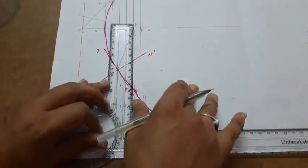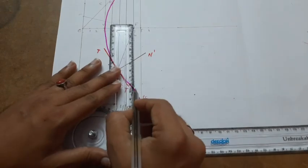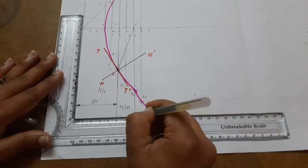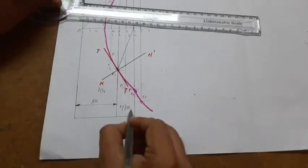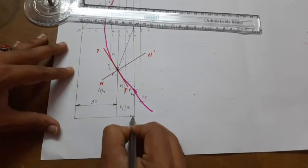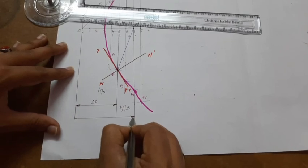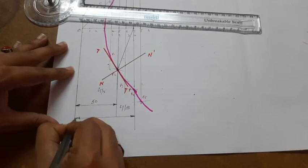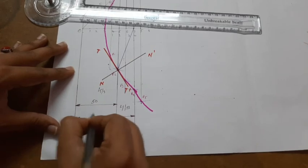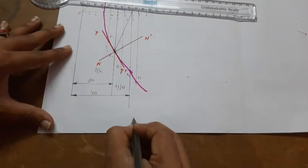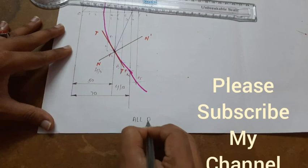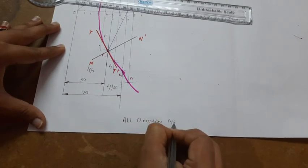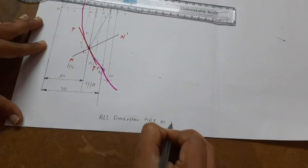Next, mark the directrix. What is the focus to directrix distance? 70mm. All dimensions indicate unless you take scale. Then note: all dimensions are in mm.